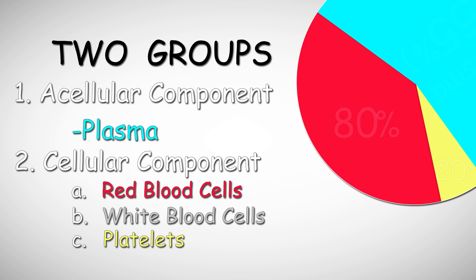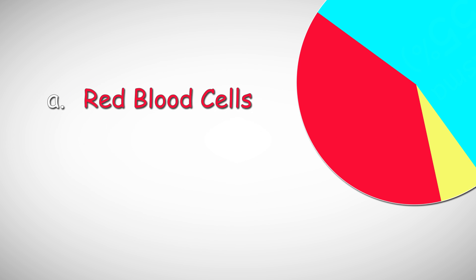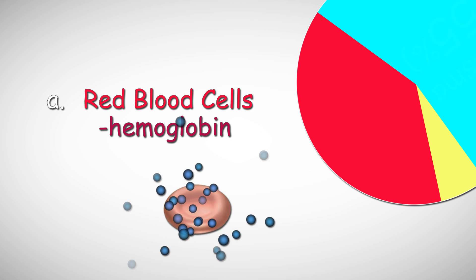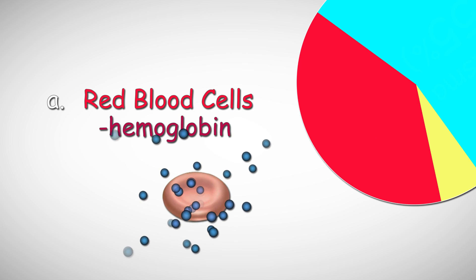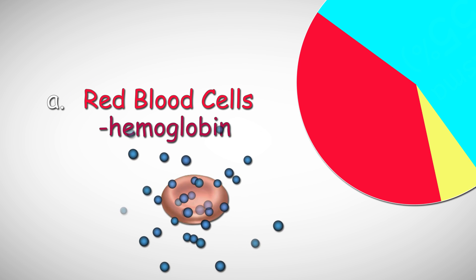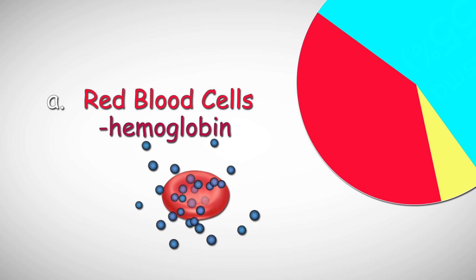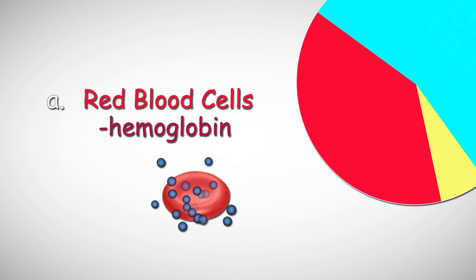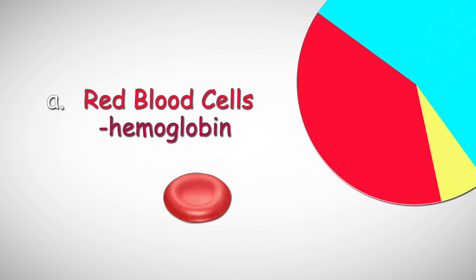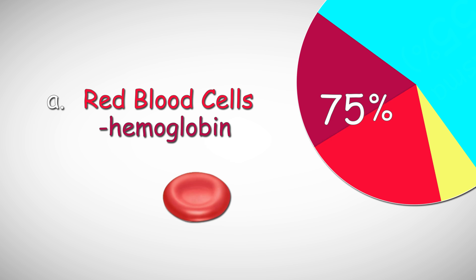The red blood cells contain a protein called hemoglobin, which is responsible for their characteristic red color and the ability to carry oxygen. Hemoglobin fills the bulk of 75–85% of the RBC count.